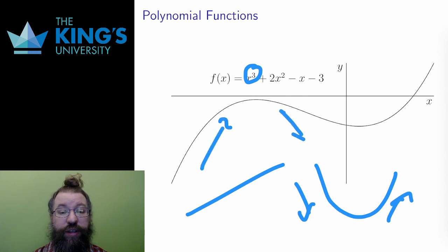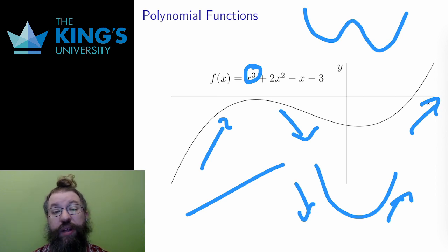A quartic, degree 4 polynomial, can have three changes in direction, leading to a w-type shape. In general, the rough shape of the graph of a polynomial is a wobble like this. And if the polynomial has degree n, there can be n minus 1 changes in direction. This gives a good idea of the general shape of polynomial graphs.